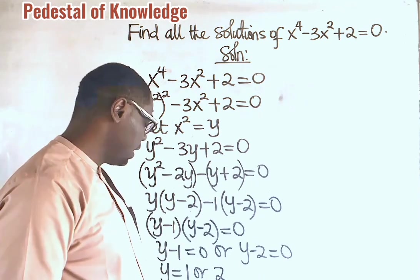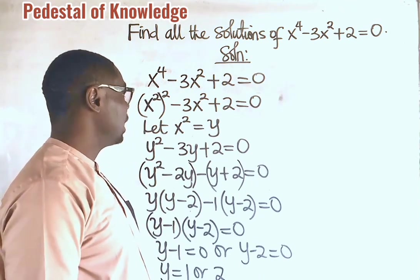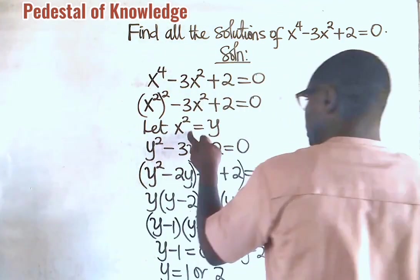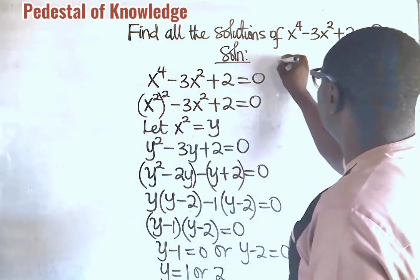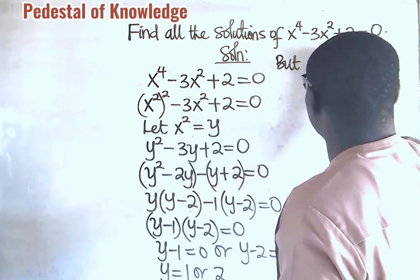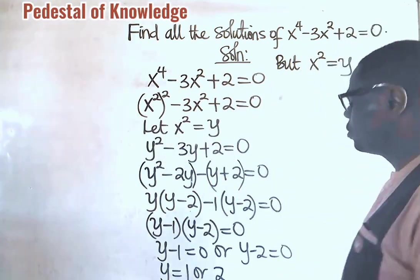But remember, we are not asked to find the value of y. Rather, we are asked to find the values of x. So, now, we now go back to this equation we have established. We say, but, we know very well that x squared is equal to y from this equation.